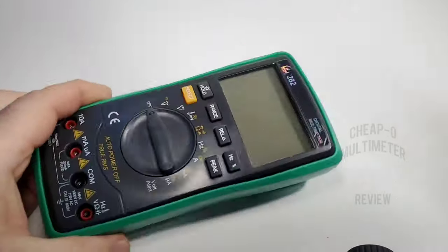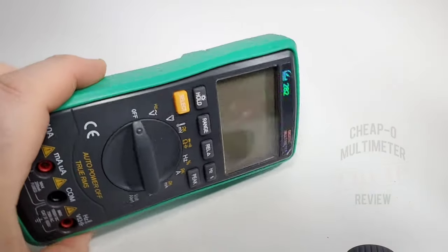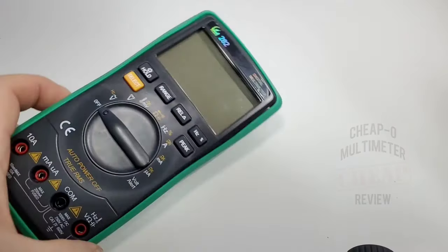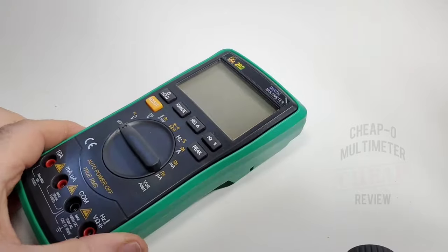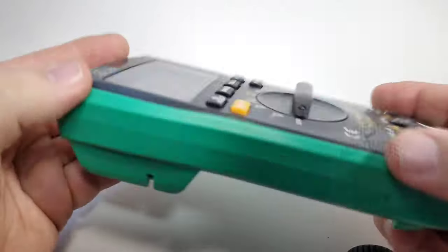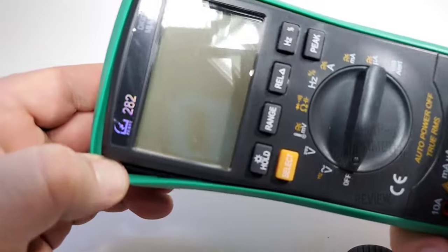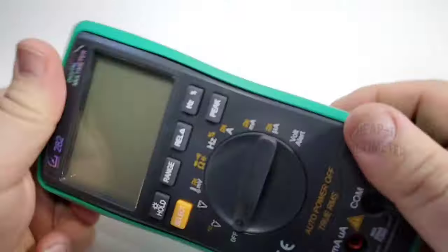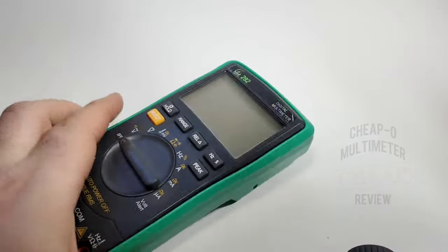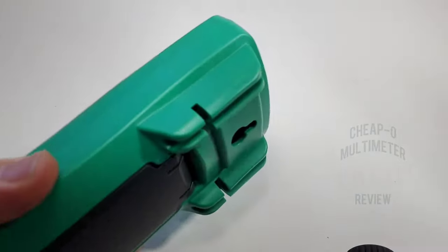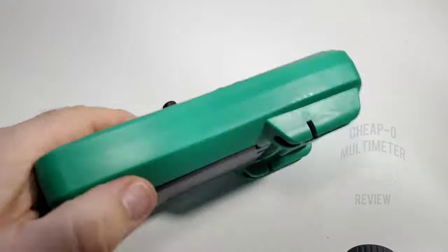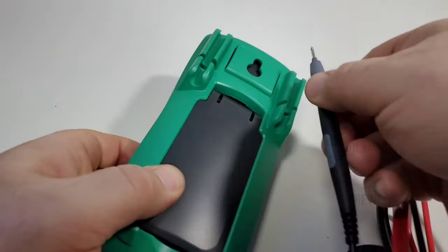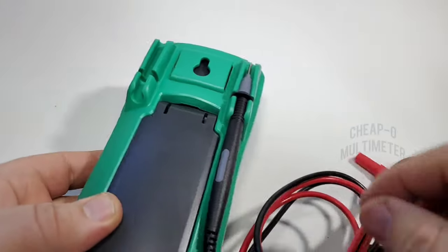Right from the get-go, it definitely looks Fluke-ish. It's kind of resembling the 17B among others. Definitely has that Fluke look. If this was in a yellow holster, at first glance you might think you're holding one of the big boys. That being said, it does have a pretty decent heft about it. Feels semi-quality. For a $20 digital multimeter, it doesn't feel bad at all. It's got some weight to it, some girth, and I think this could definitely withstand a few bumps.